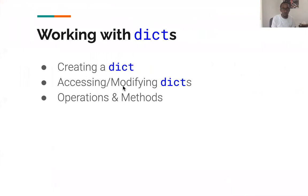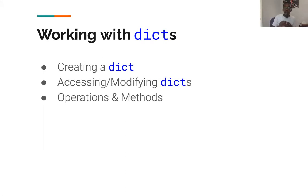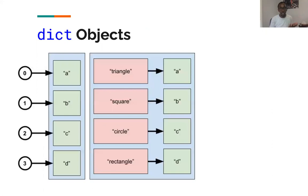With that, we've covered most of the ground on dictionaries. We know how to create a dictionary, how to access and modify using the CRUD acronym — Create, Read, Update, Delete. We've looked at how to update using the `update` method and using special operators. We've also looked at how to get the keys, values, and items. That covers it for dictionaries.